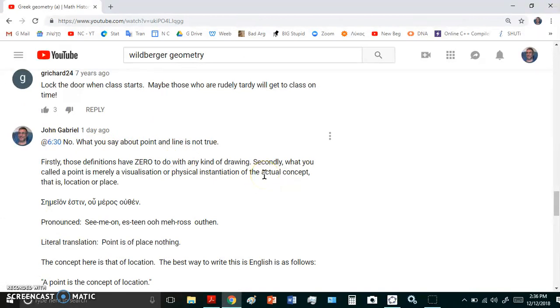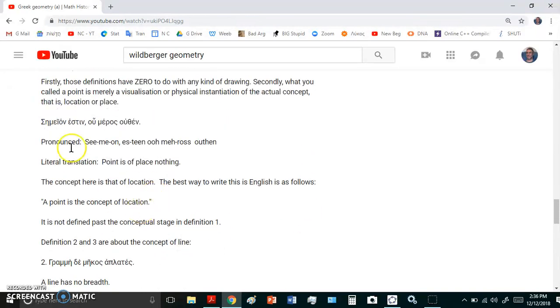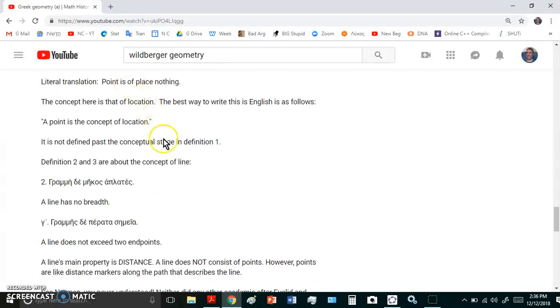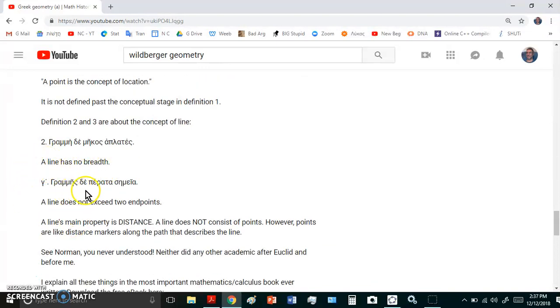What he says about point and line is not true. Firstly, those definitions have zero to do with any kind of drawing. It's got nothing to do with drawing or construction. Secondly, what one calls a point is merely a visualization or physical instantiation of the actual concept, that is a location or a place. The very first definition given is Simeon Estin Omeros Uthen, which literally interpreted means point is a place nothing. And the best way to have written this in English is just simply this: a point is the concept of location. It is not defined past the conceptual stage in definition 1.